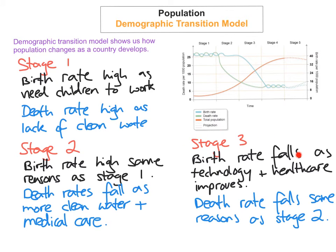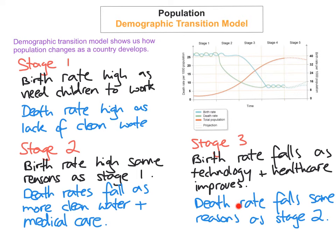In stage 3, the birth rate falls dramatically. This is because of the improvement of technology — such as machines and tractors helping on farms — so they don't need to have as many children. Family planning and education is improved, so people know more about contraceptive methods. Healthcare also improves so infant mortality is reduced. The death rate continues to decline but not as rapidly as in stage 2 — it starts to ease off but is still declining, because there's more access to cleaner water, improved medical care, improvements in sanitation, and better education about diet and healthy eating.